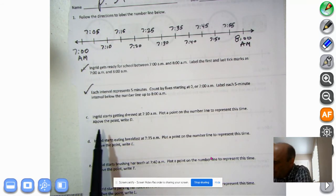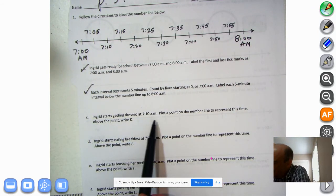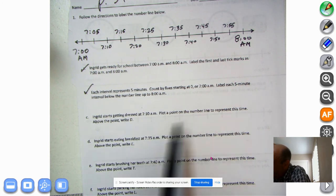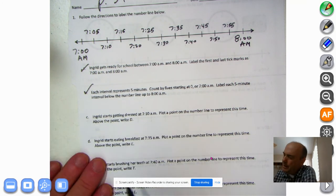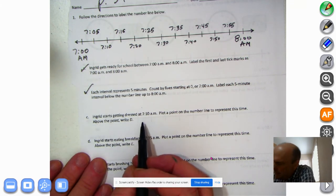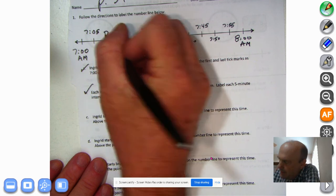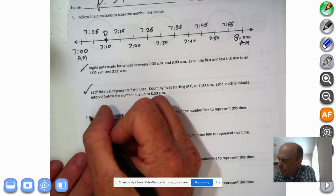C. Ingrid starts getting dressed at 7:10 AM, plot a point on the number line to represent this time. Above the point, write D. So we're going to go to 7:10 and write D for getting dressed. Check.